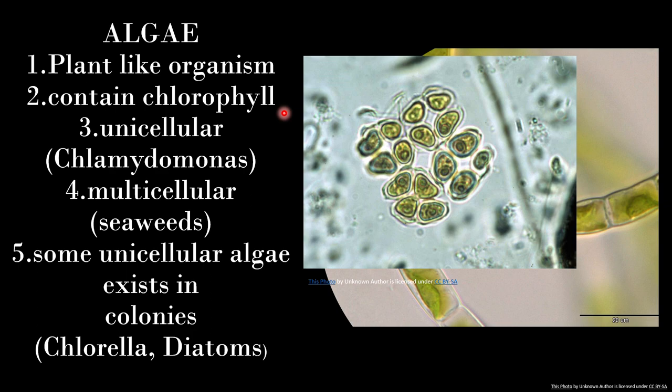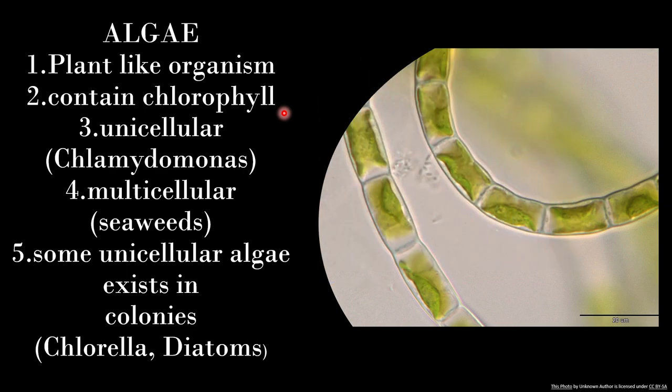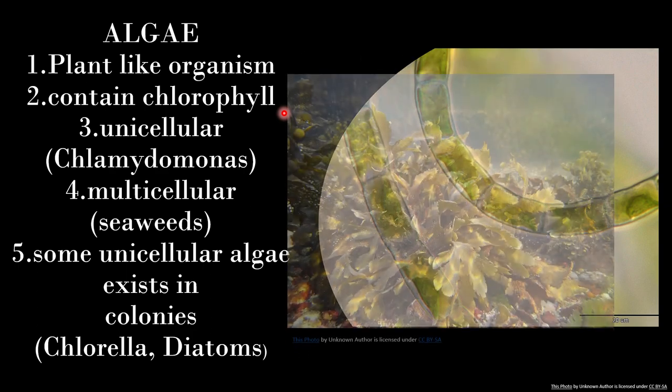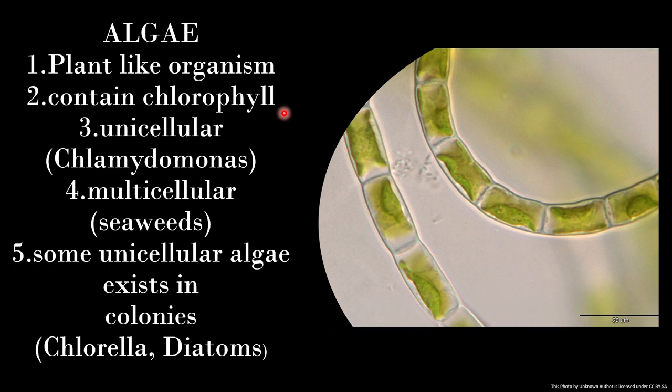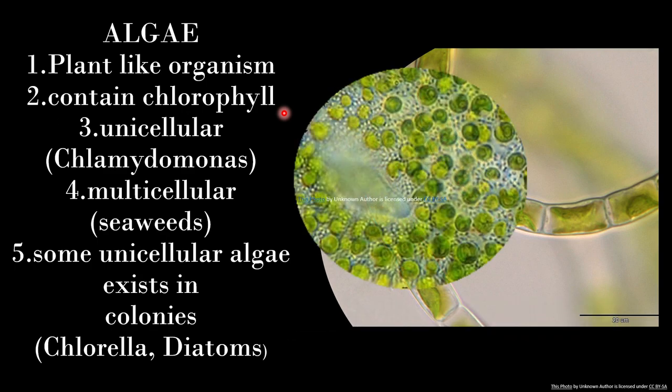The next type is algae. They are plant-like organisms that contain chlorophyll. They can be unicellular such as Chlamydomonas, or multicellular such as seaweeds. Some unicellular algae exist in colonies, such as Chlorella and diatoms.